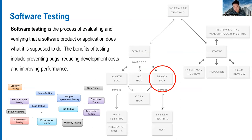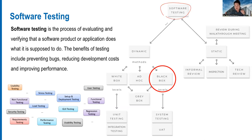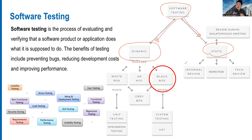Before we start, this is the same slide we talked about in Week 2 — what is software testing and what is the landscape of software testing. Testing is the process of testing software, and there are two types: static testing and dynamic testing. Static testing means we test the software without executing the code; dynamic testing means we test by executing the code.